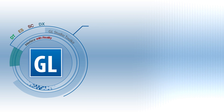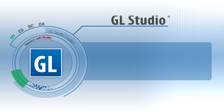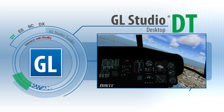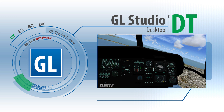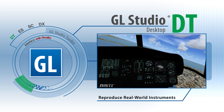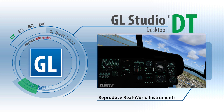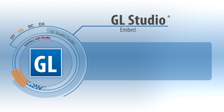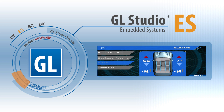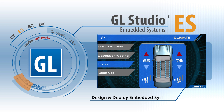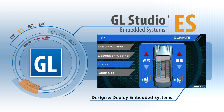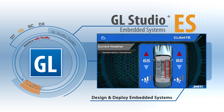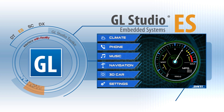GL Studio DT for desktop systems quickly reproduces real-world instruments and controls for use in desktop-based training systems. GL Studio ES for embedded systems seamlessly transitions the project from the prototype to the deployed embedded system without compromising the industrial designer's original vision.